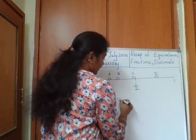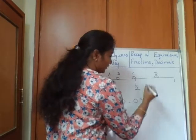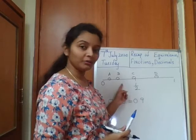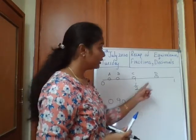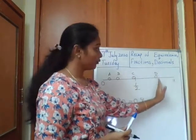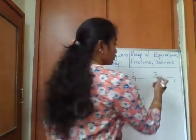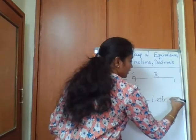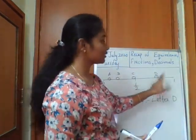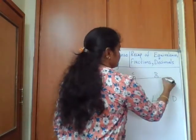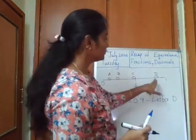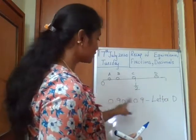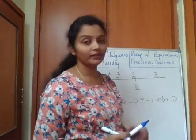To find 0.9: the middle is 0.5, and the end is 1. Just before 1 there will be 0.9. So the letter that best represents 0.9 is letter D. Point D best represents 0.9 on this number line.